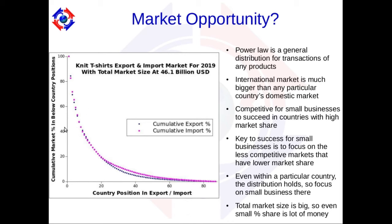The first and most important point in international trade is to figure out exactly where the market opportunity is for your set of products. I will illustrate that using this graph. The X axis corresponds to the country's position in export or import, while the Y axis corresponds to the cumulative market percentage available at and below that point. For example, at the second set of points — approximately around 83 to 84 percent — it means there is 83 to 84 percent of available market share at that point.